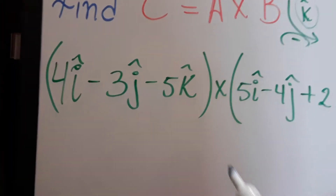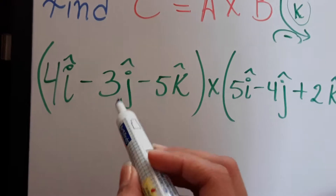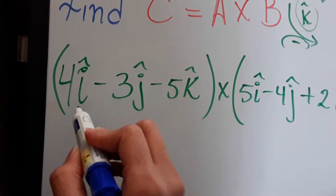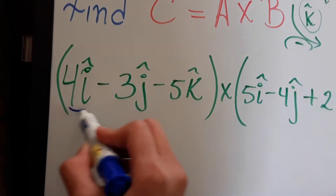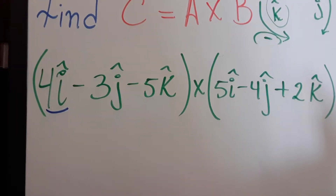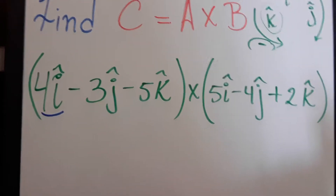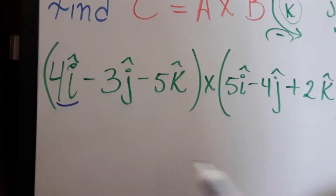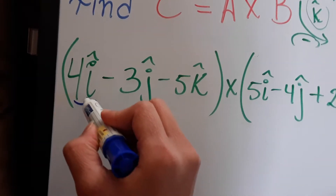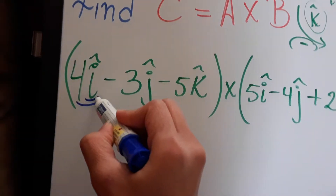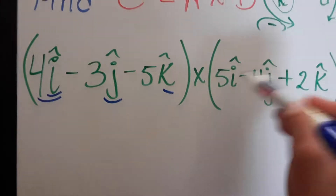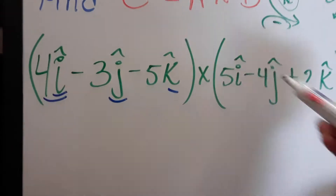So now we're going to start multiplying each term. We're going to start with the first term, and it's going to be basically a distributive multiplication. In this case, you're going to have to take into account the unit vectors i, j, and k when you're doing the cross product.